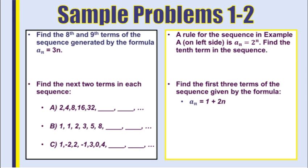Earlier when we talked about arithmetic and geometric sequences, we stated that n is always the number of the term. So if we are trying to find the eighth term, this would be a subscript 8 equals 3 times 8. Because we're trying to find the eighth term, n stands for the number of the term. 3 times 8 gives us 24, so our eighth term is 24.